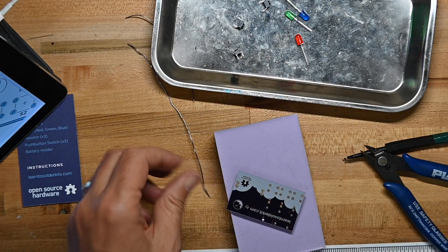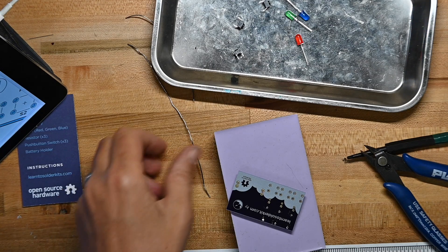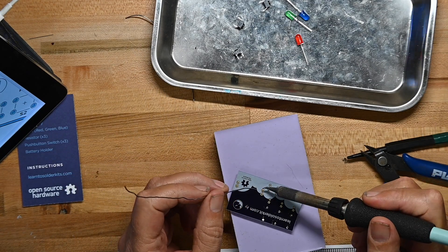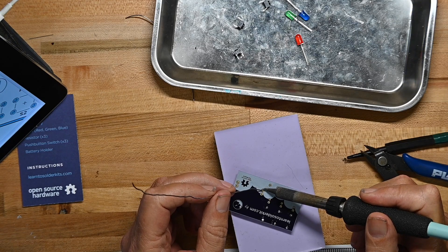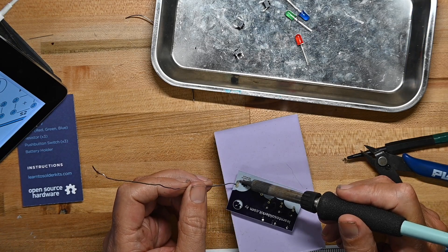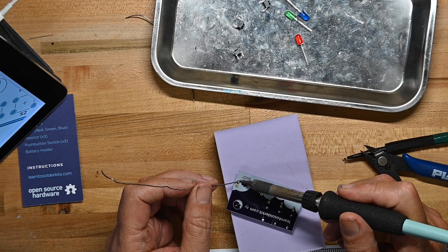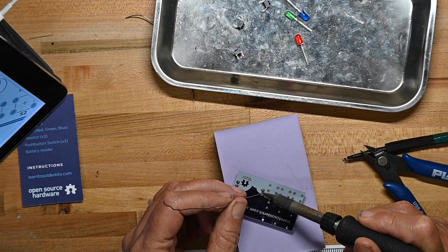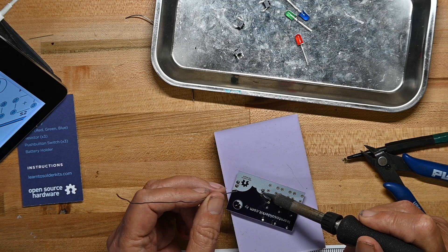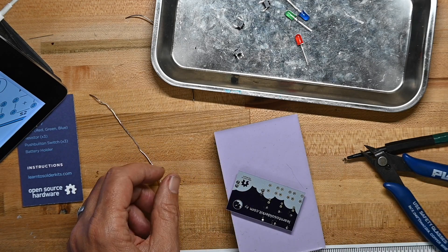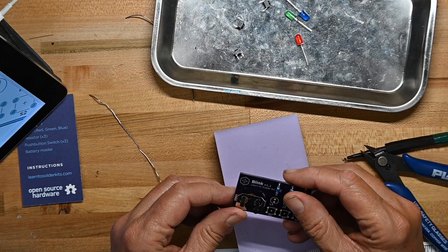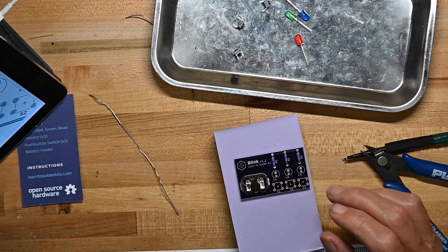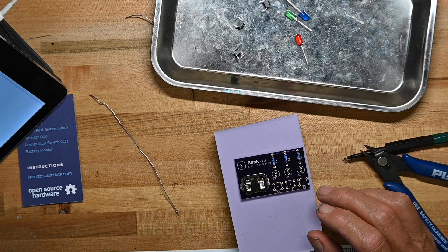The key goal with a beginner is you want to minimize the mistakes they might make. Putting the battery holder on backwards wouldn't be bad - you just have to slide the battery in from the other side. But if they think they've done it right and they try to put the battery in and it's not working, they may get frustrated or surprised.